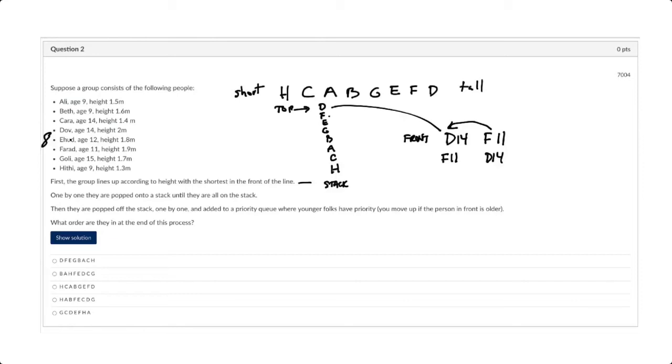And then, so that was Farad. Then we have Ehud coming off, but Ehud is 12. So Ehud at 12 lands here, but has some priority over Dove. So I'm now going to have Ehud at 12, and then Dove at 14 is still at the back.